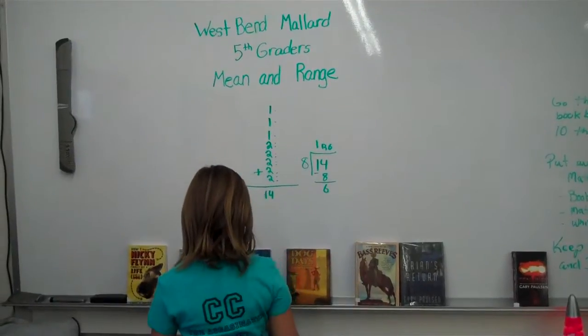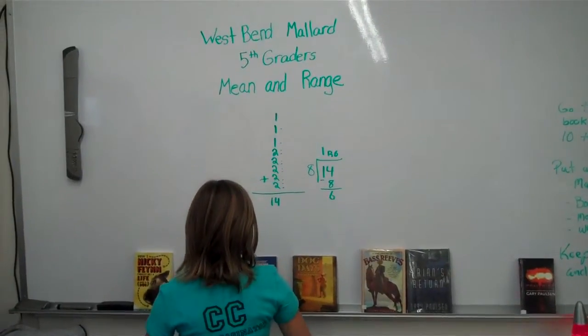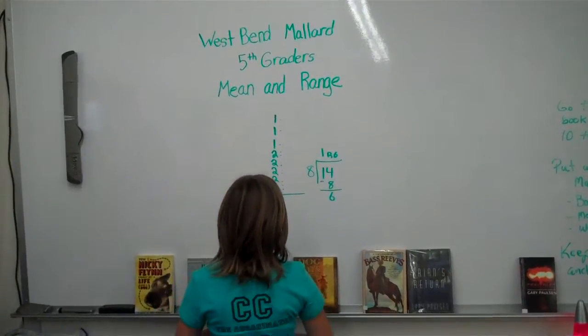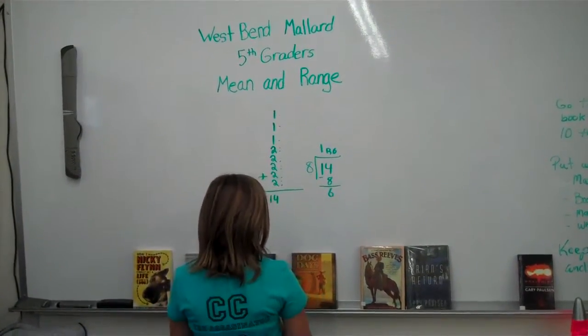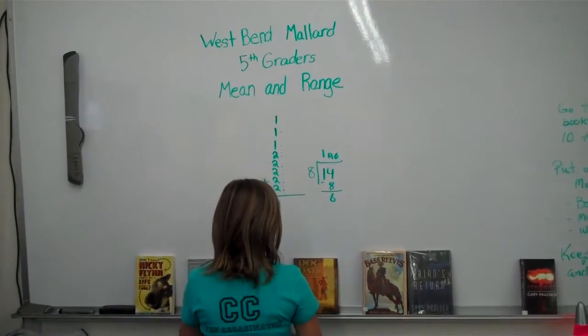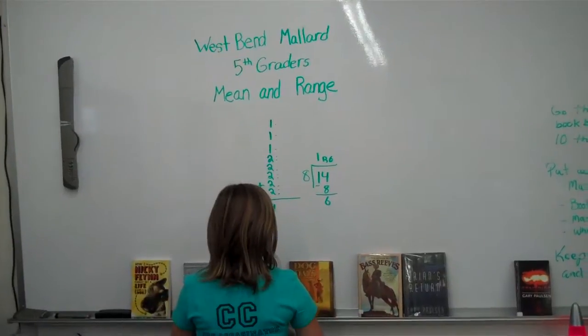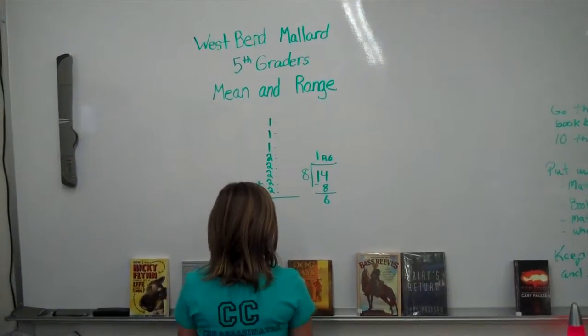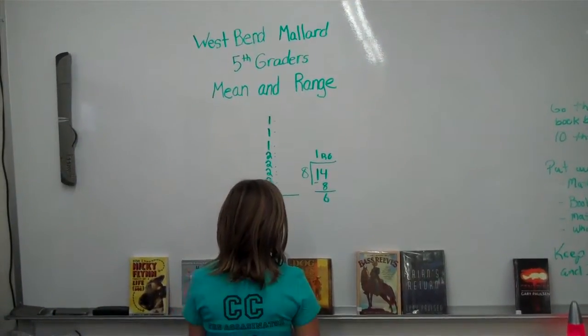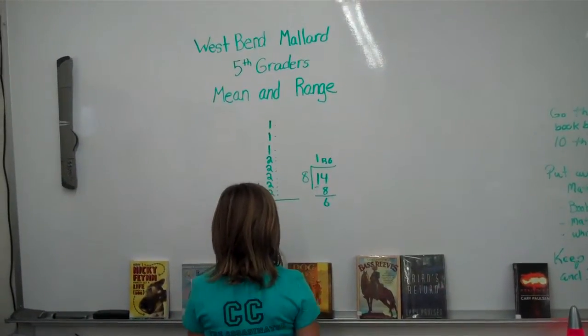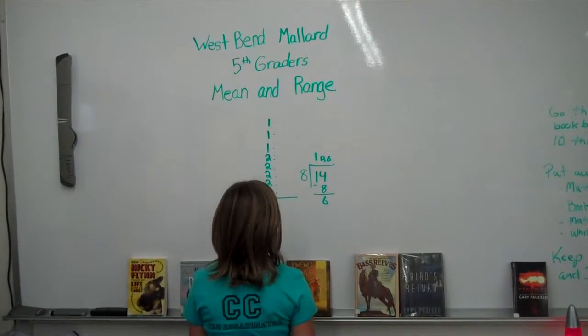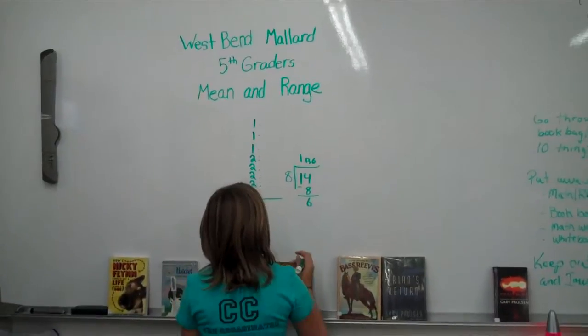Since there is your remainder, you round to the nearest. Since the remainder is over, you have five. Your answer would be two.